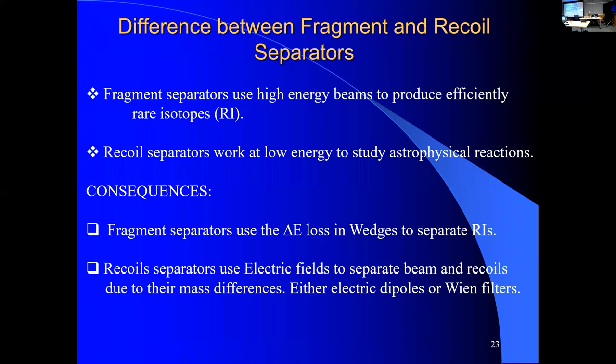Now summarizing the difference between the fragment separator and the recoil separator. The fragment separator is used at higher energies to produce efficiently rare isotopes, and wedges are possible and actually used. A recoil separator works at very low energies to study astrophysical reactions, and we need Wien filters, despite the fact that Wien filters are complicated and very sensitive devices because of the electrostatic fields and all the complications with that. But they have to be used, and that's why you see, I've seen in the tour yesterday, the big Wien filter, or at least the magnet of it already installed. Consequence, I just mentioned, the wedges and recoil separator with the Wien filter.